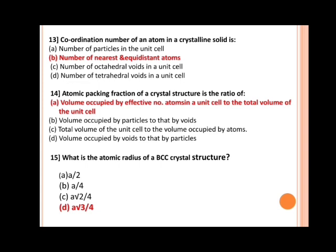Next, coordination number of an atom in a crystalline solid is. Options are: a) number of particles in the unit cell, b) number of nearest and equidistant atoms, c) number of octahedral voids in a unit cell, d) number of tetrahedral voids in a unit cell. The correct answer is b) number of nearest and equidistant atoms.